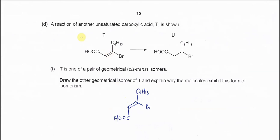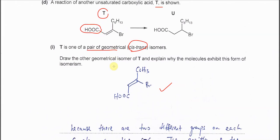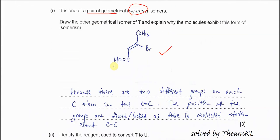Part D: A reaction of another unsaturated carboxylic acid T is shown. T is one of the pair of geometrical isomers cis-trans. Draw another geometrical isomer of T. Very easy, you just move the larger group here to another position. So you just shift this one to another place. So this is another cis-trans isomer of T, because the carbon now, the groups, they are at different sites.